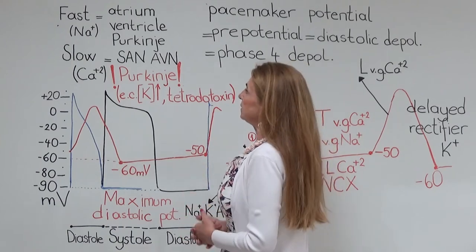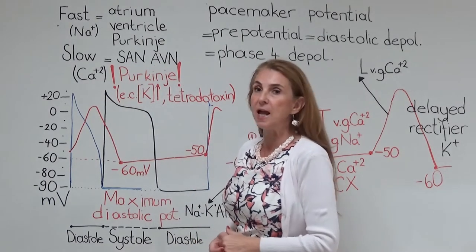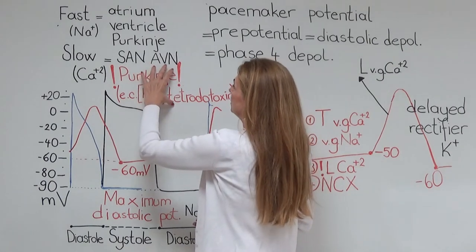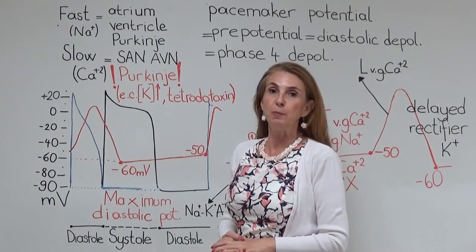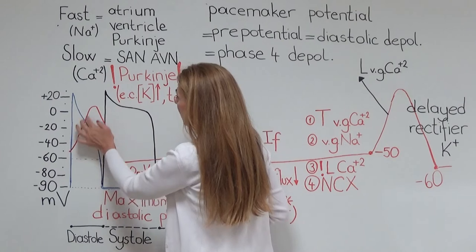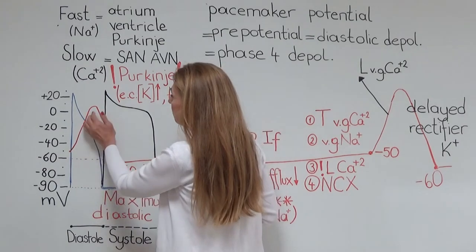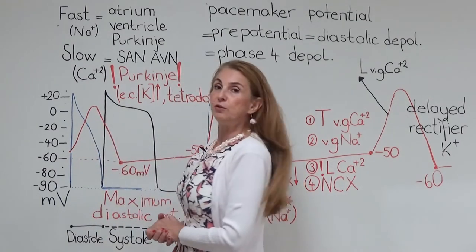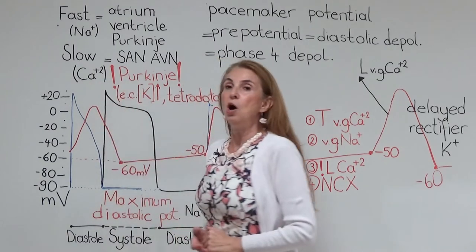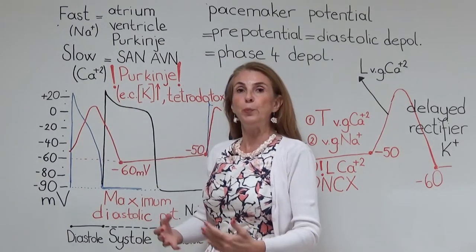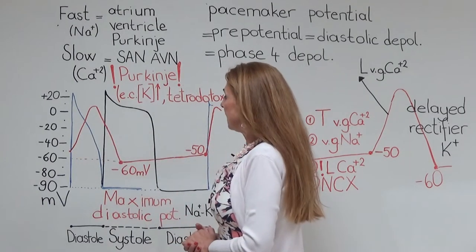The second action potential is the slow action potential. It's produced especially in the sinoatrial and atrioventricular nodal cells. And if the physiological conditions are changed, it is possible to obtain a slow action potential also in the Purkinje cells. Here is a slow action potential recorded from the sinoatrial node. The depolarization phase is less steep compared to the fast action potential, because it is produced by voltage-gated calcium channels that open and close slowly.